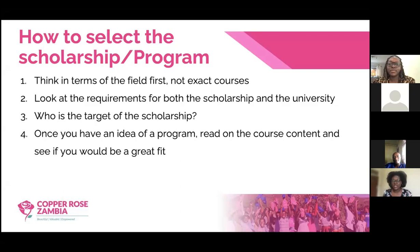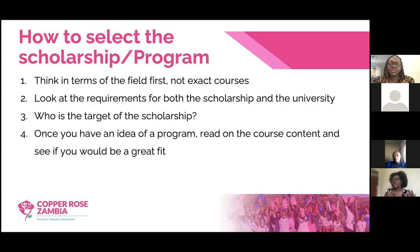Sometimes the target population description shouldn't discourage you from applying. For example, when Chevening says it wants leaders, some people think they don't have leadership experience — but we all have leadership capabilities. Some people lead from the middle, some from the front. Think about how you can present yourself as the target they want. If applying for a leadership-based program, show your leadership skills in whatever form — roles in university, volunteering. Volunteering is also a leadership trait. Tailor the answers to your scholarship questions in a way that makes you look like the target.